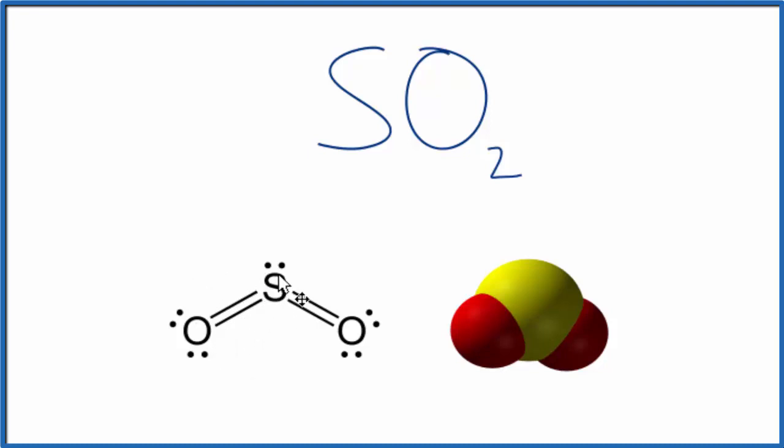So when you see these lines, we're talking about a covalent bond, and the electrons are going to be shared between the sulfur and the oxygen. That's how a covalent bond works. The electrons are shared.